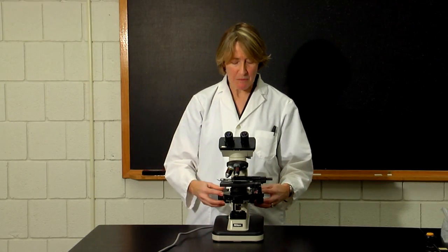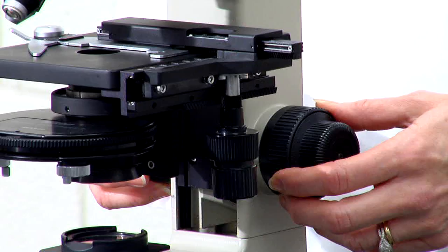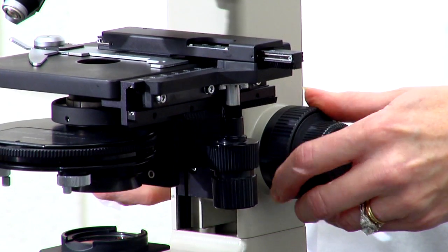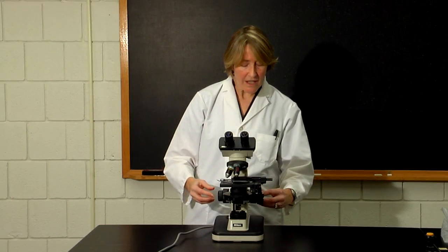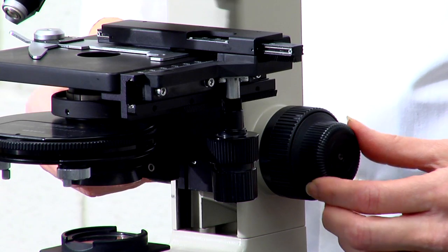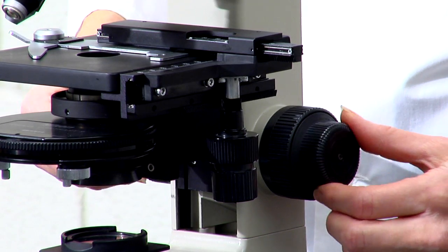You also have a set of coarse adjustment knobs. These can be found on both sides of the microscope. They are used to get the object nearly focused. Within the coarse adjustment knob is the fine adjustment knob. This is for bringing the object into final focus.